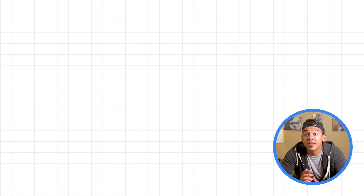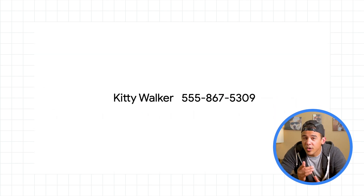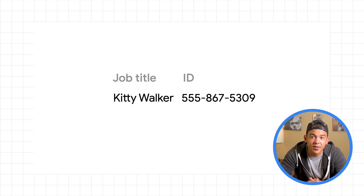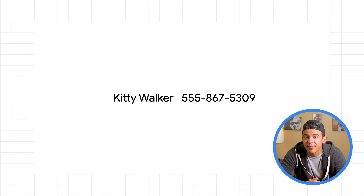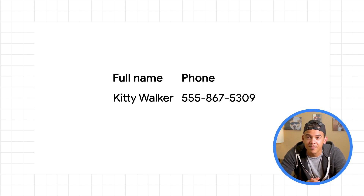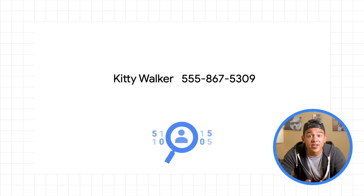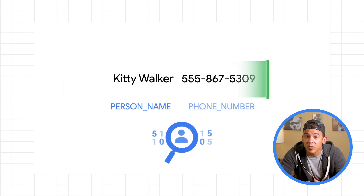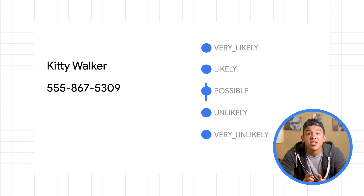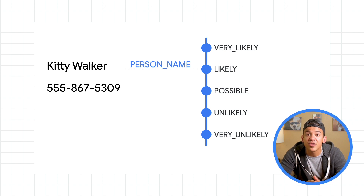Time for an example. Take a look at this string. What do you think we're looking at here? Well, it could be a job title followed by an arbitrary identification number. On the other hand, it could also be a person's name and a phone number. When we run this through a DLP inspection job, as expected, we get two infotype matches. Kitty Walker is identified as the infotype person name with a likelihood score of likely, and the 10-digit number got matched to phone number with a likelihood score of possible.